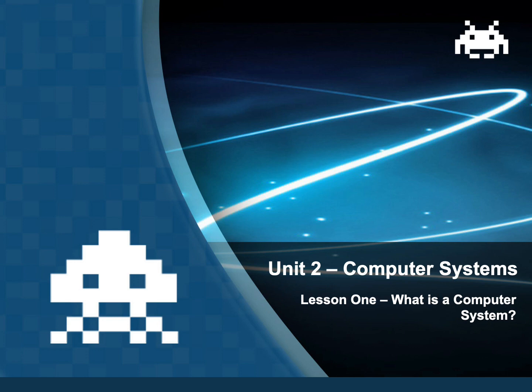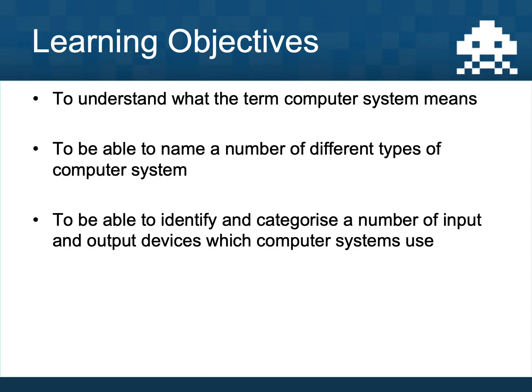This is lesson 1 of unit 2 — computer systems — and this unit is aimed at year 7 students. In this video we're going to look at what the term computer system means, name a number of different computer systems, and then identify and categorize a number of input and output devices that computer systems use.